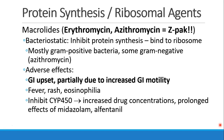The first is macrolides. This includes erythromycin, or everyone's favorite drug, azithromycin, commonly known as the Z-Pak. These drugs are bacteriostatic. They inhibit protein synthesis and bind to the ribosome. They're effective mostly against gram-positive bacteria, and azithromycin is also effective against some gram-negative bacteria.